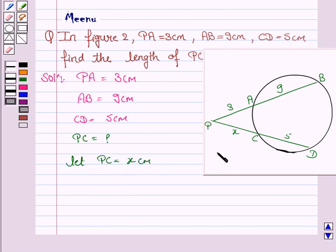Now, if PC is x cm, therefore PD will be equal to x plus 5 cm. That is, PD is equal to PC plus CD.